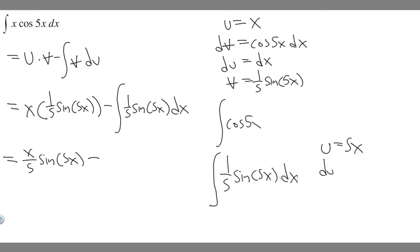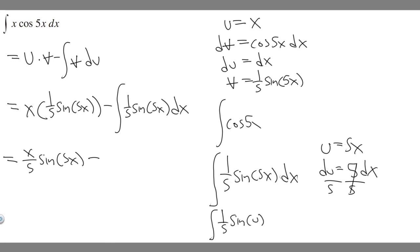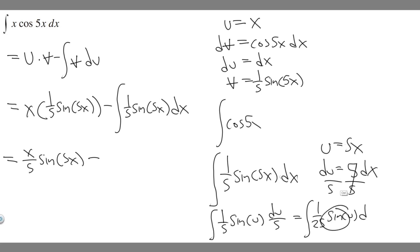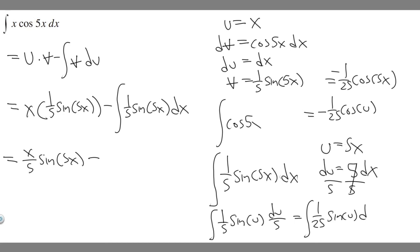du is 5 dx. Dividing both sides by 5, dx equals du over 5. So it's going to be 1 over 5 times the sine of u times du over 5. Taking the constants out front, 5 times 5 is 25, so it's 1 over 25 times the integral of sine of u du. The integral of sine is minus cosine, so it equals minus 1 over 25 times the cosine of u. Substituting back, the integral is minus 1 over 25 times the cosine of 5x.